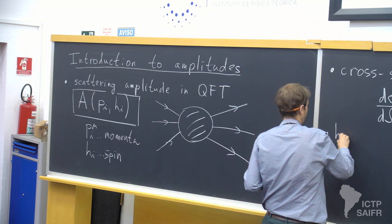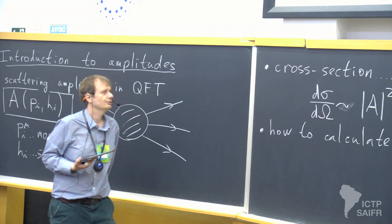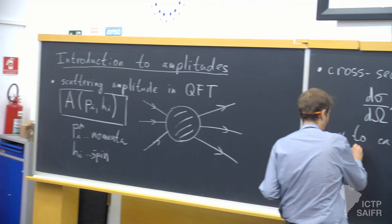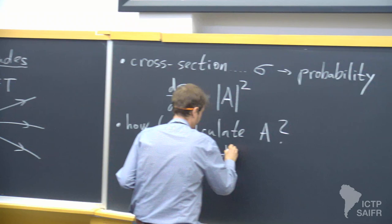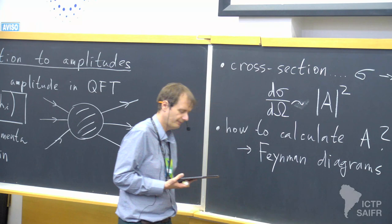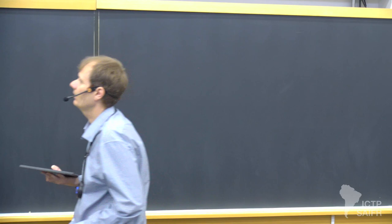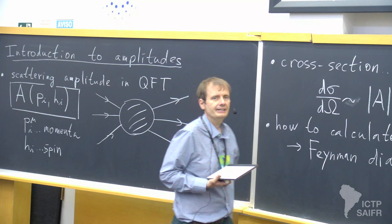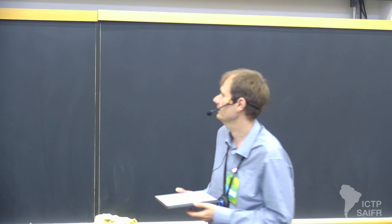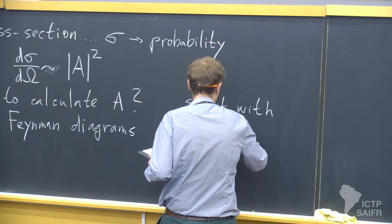How to calculate the amplitude A? There is a standard and correct answer: the method of Feynman diagrams, developed by Feynman and Schwinger, Dyson and others, a long time ago — partially pioneered by Dirac in the 1930s, and then by Feynman in the 1940s and 50s. The starting point is the theory in which we want to do the calculation. We have certain particles we scatter, and the way they interact — how they talk to each other — is given by the Lagrangian in quantum field theory. The Lagrangian tells us how the particles interact.